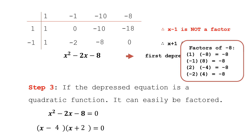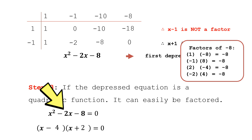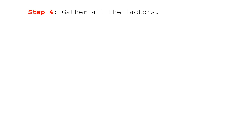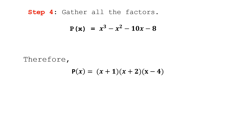The complete factors of negative 8 are: positive 1 times negative 8, negative 1 times positive 8, positive 2 times negative 4, and negative 2 times positive 4. Adding each pair, positive 2 and negative 4 give negative 2, which matches. So x minus 4 and x plus 2 are factors. Step four: gathering all factors, p(x) = (x+1)(x+2)(x-4). We have three factors because the polynomial is degree 3.